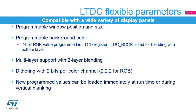Multi-layer support with blending, two layers. Dithering: 2 bits per color channel, 2-2-2 for RGB. The dithering pseudo-random technique adds a small random value to each pixel color channel, rounding up the most significant bits when displaying 24-bit data on an 18-bit display. New programmed values can be loaded immediately at runtime or during vertical blanking.